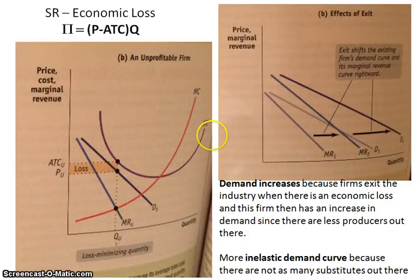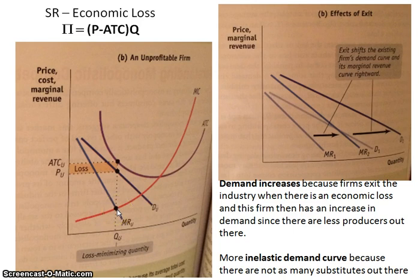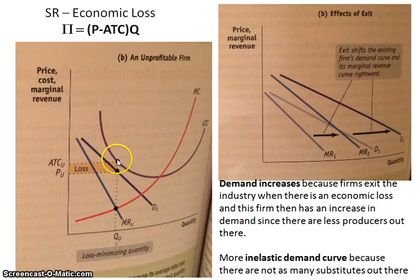Now let's look at the economic loss scenario. We've got our marginal cost curve and our ATC. At the profit maximizing output of MR equals MC, you take it up to the demand curve to get the price. The ATC is above the price, so when you calculate economic profit — price minus ATC multiplied by quantity — you get an economic loss.